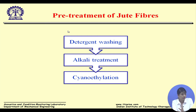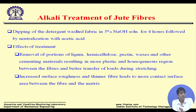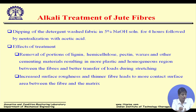Once good bonding is formed between the fiber and matrix, we increase mechanical strength and produce a good composite. Pre-treatment processes include washing with detergent, alkali treatment, and cyanoethylation. We dip the fiber in sodium hydroxide solution for four hours — this treatment removes impurities present in the jute fiber, opening up space to form a good bond between jute fiber and the matrix.